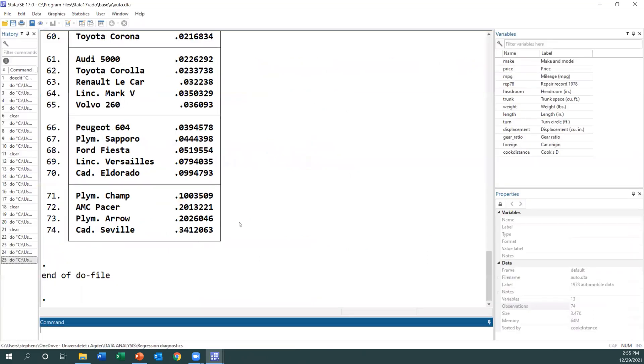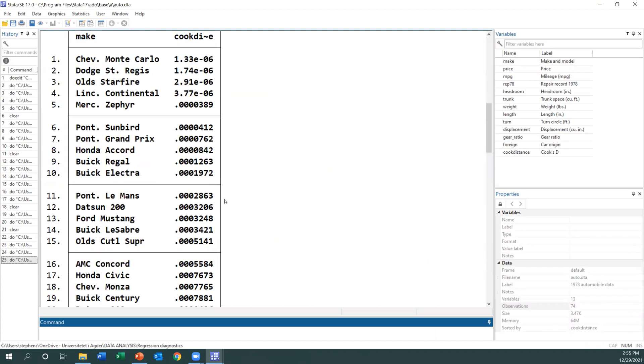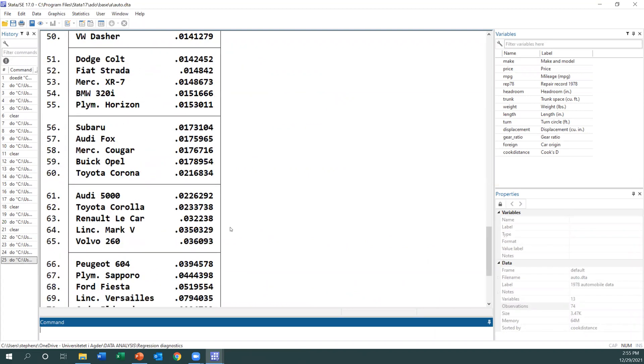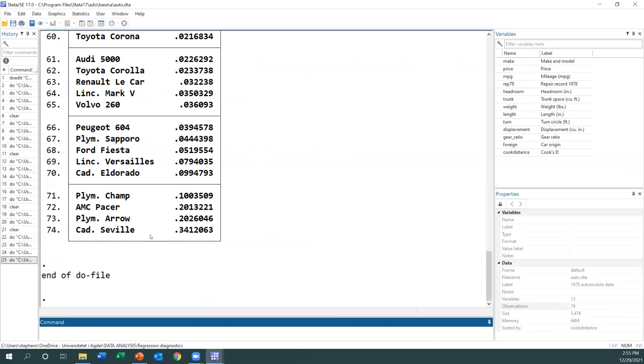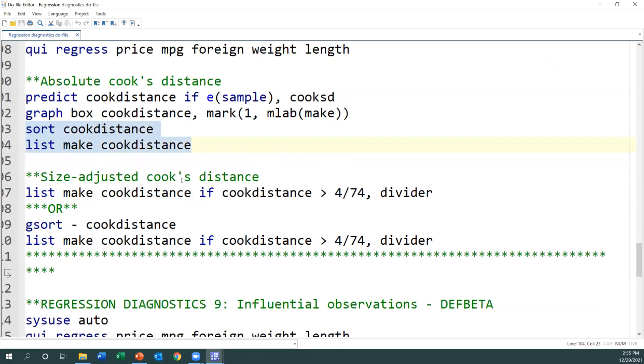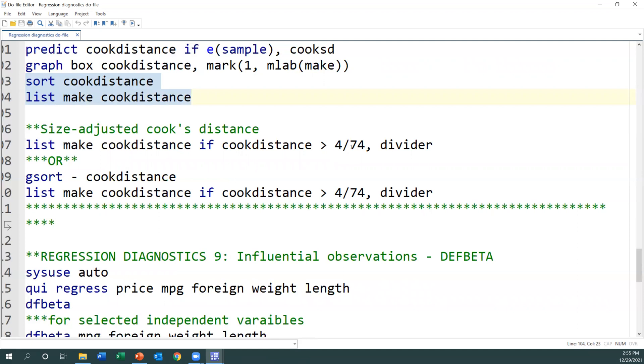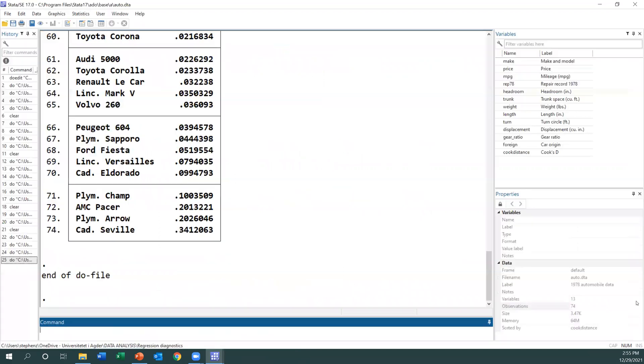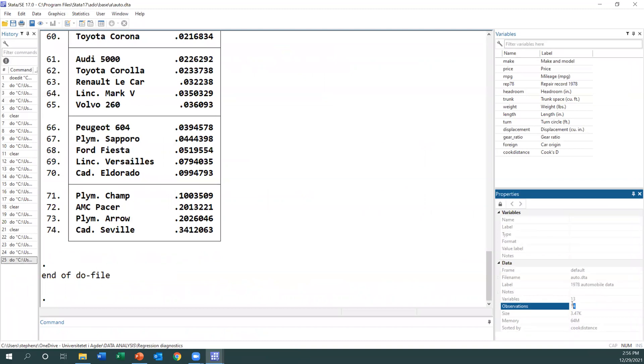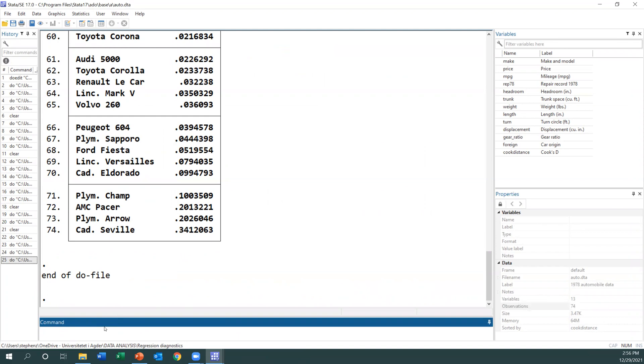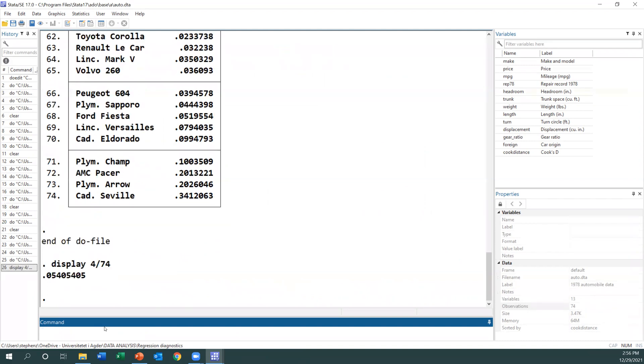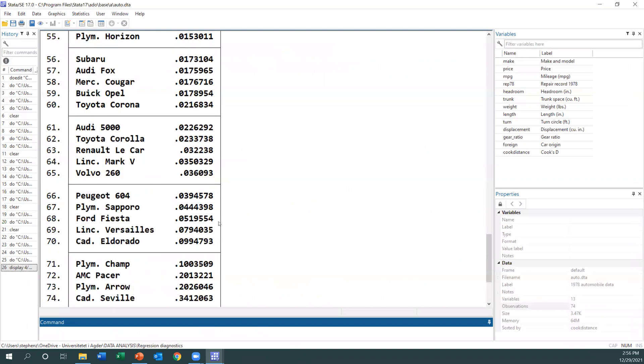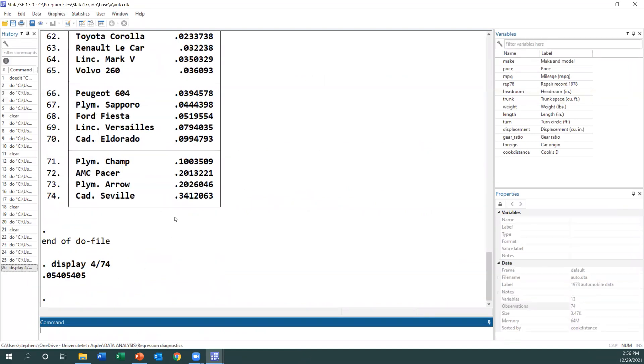Here we don't have influential values. We can sort and list them and see how they are. Here I've said list. These are all the values sorted from smallest to the highest. You can see that this car has the greatest value, but it's less than one, so it's not a problem. The second approach is to consider the size. The size is to divide 4 by n, and here n is number of observations. You can see that below here, number of observations is 74. If I calculate, display 4 divided by 74, I'll get 0.054. I'll see which values are greater than this and consider them to be influential.